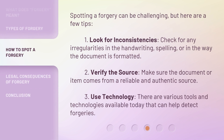Spotting a forgery can be challenging, but here are a few tips. One: look for inconsistencies — check for any irregularities in the handwriting, spelling, or in the way the document is formatted. Two: verify the source — make sure the document or item comes from a reliable and authentic source. Three: use technology — there are various tools and technologies available today that can help detect forgeries.